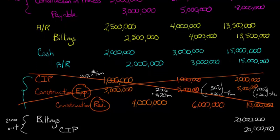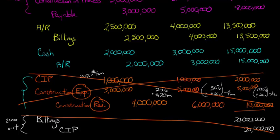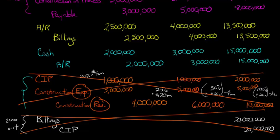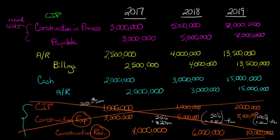Instead, we're going to have a different entry for 2019 that takes care of all the revenue and expenses. Also, remember that under the percentage of completion method, at the end we zero out our billings and our CIP. Under completed contract, we also have to zero out billings and CIP, but the CIP is not going to be at $20 million. We are going to be debiting billings and crediting CIP to zero them out, but not for the same amount. These other entries, though, are exactly the same as we'll be making under the completed contract method.